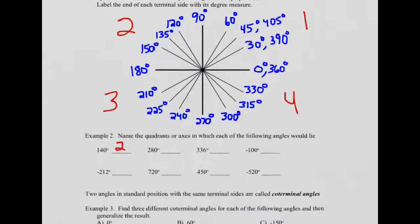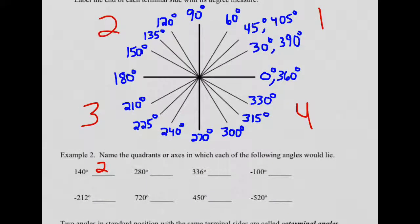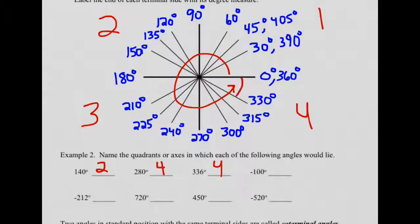So 280 degrees would be somewhere down in the fourth quadrant. 336 degrees is also in quadrant 4. Negative 100 would go in the negative direction, a little past negative 90, so that puts you in quadrant 3.